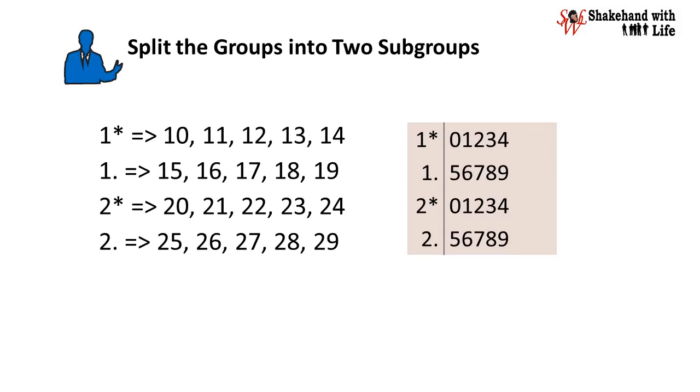We will denote the stem as 1 star for the possible numbers such as 10, 11, 12, 13, and 14. And as 1 dot for the possible numbers like 15, 16, 17, 18, 19.